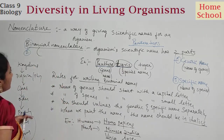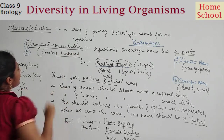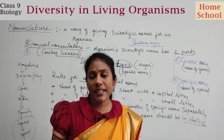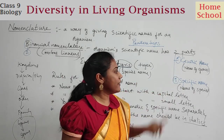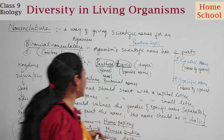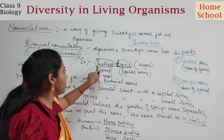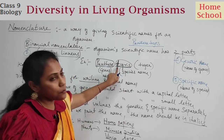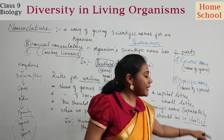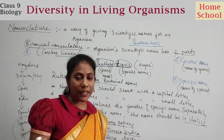Who introduced binomial nomenclature? It was given by a scientist called Carolus Linnaeus. He is the scientist who introduced binomial nomenclature. To summarize: the name consists of two parts — generic name, which refers to the genus, and specific name, which refers to the species. The genus name starts with a capital letter, the species name starts with a small letter, they are underlined separately when written, and printed in italics font.